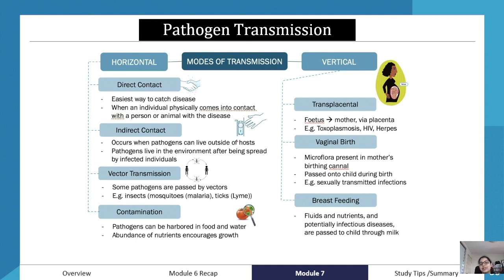Trans-placental transmission is where a fetus can get a disease from the mother via the placenta. Examples of trans-placental transmission include HIV and herpes. During vaginal birth, microflora present in the mother's birth canal can be passed on to the child.